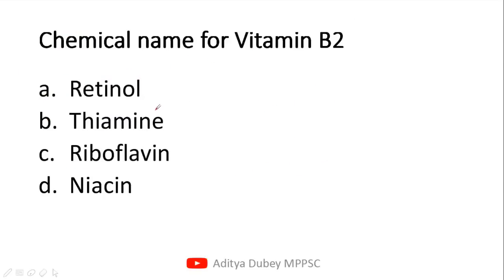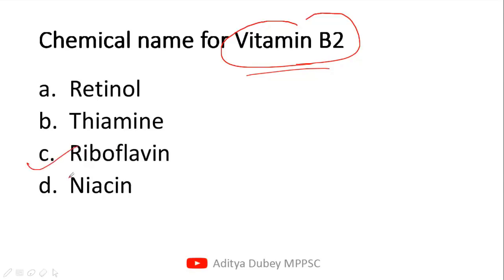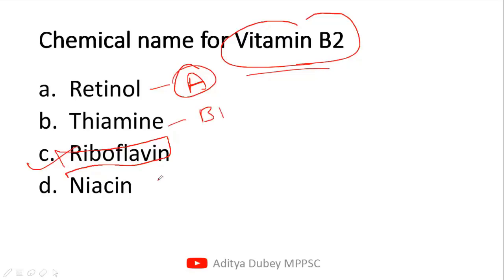The next question: what is the chemical name for Vitamin B2? The correct answer is Riboflavin, which is option C. Retinol is the chemical name for Vitamin A. Thiamine is Vitamin B1. Riboflavin is Vitamin B2. And Niacin is Vitamin B3. These are all important facts for you.